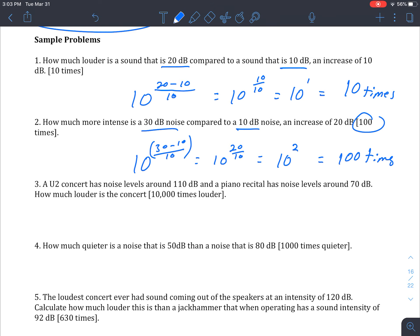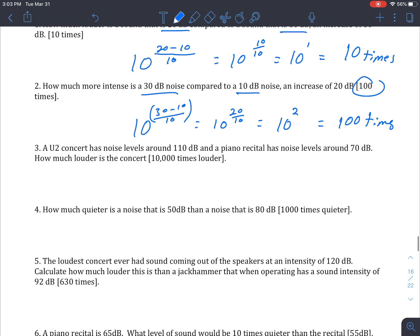Three, a U2 concert, which I don't even know if you guys know who U2 is. Maybe extra credit if you tell me who the lead singer is. They play with 110 decibels, and then at a piano recital, it was 70. So how much louder was this concert? It's the same thing. 10 to the 110 decibels minus the 70 divided by 10 because it is in decibels, and we need it in bells to have that conversion to a linear scale. And then you just continue out, and you should be able to get 10,000 times louder.